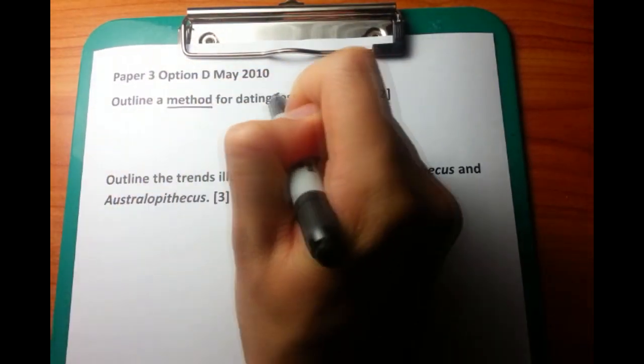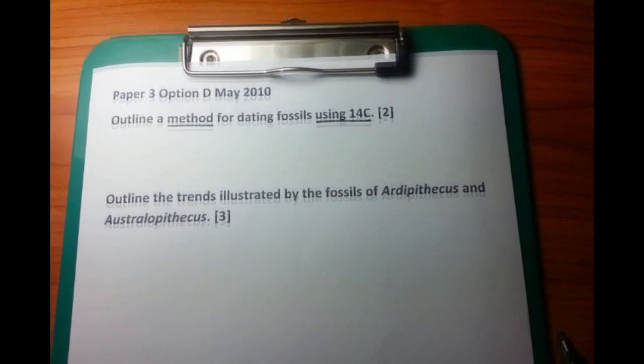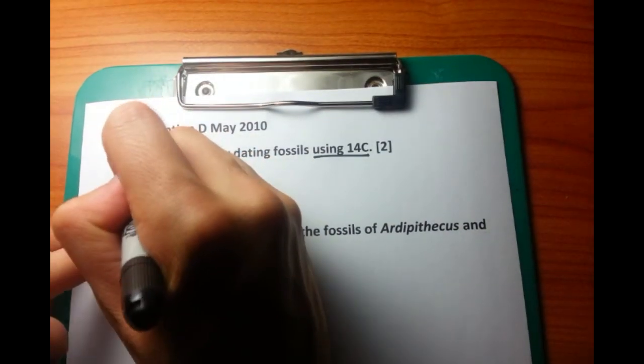So let's look at this option D question. Outline a method for dating fossils using carbon-14.